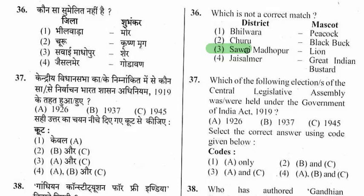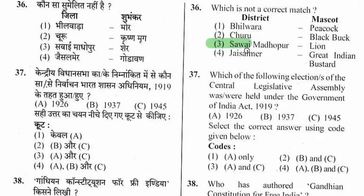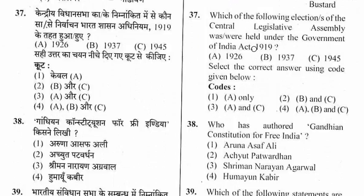Question 37: Which elections of the Central Legislative Assembly were held under the Government of India Act 1919? Options include 1926, 1937, and 1945. The right option is the third one — the 1926 and 1945 elections of the Central Legislative Assembly were held under the Government of India Act 1919.